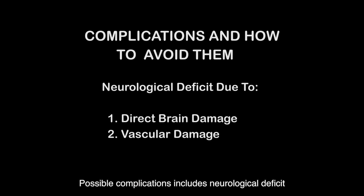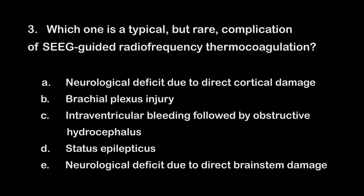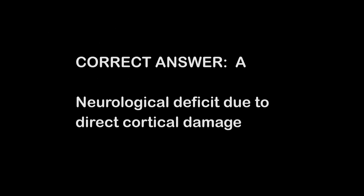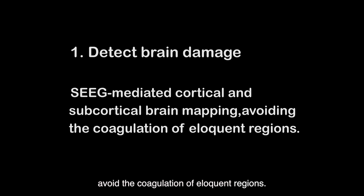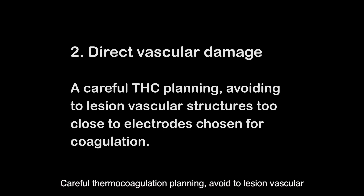Possible complications include neurological deficits due to direct brain damage or vascular damage. The information obtained by SEEG-mediated cortical and subcortical brain mapping helps avoid the coagulation of eloquent regions. A careful thermocoagulation planning avoids lesioning vascular structures too close to the electrodes chosen for coagulation.